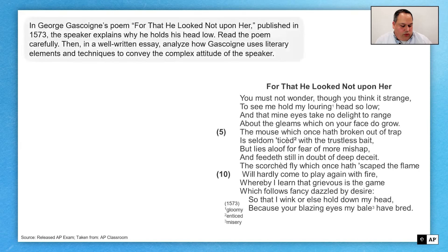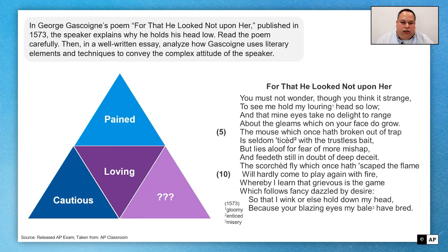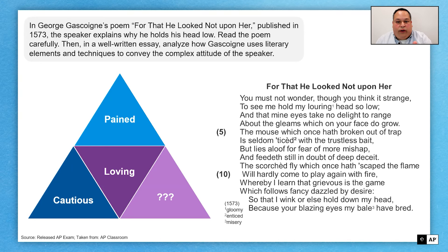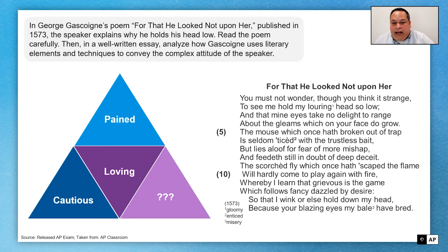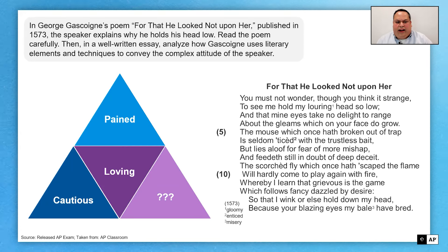So that's exactly what I want us to do here. As we read this poem, we might get different impressions about the attitude of the speaker. We might think the speaker is pained, cautious, or loving — and there's certainly textual evidence to support each of these things. But I don't want you to think these are the right answers or the only answers. What is it that you can offer? How do you think Gascoigne uses literary elements and techniques to convey the complex attitude of the speaker? How is the speaker feeling about the lady, about love, about his predicament, about life itself?